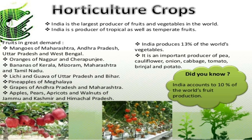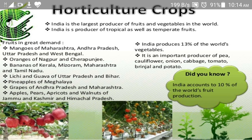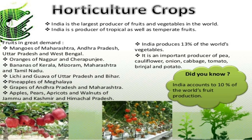Horticulture crops: India is the largest producer of fruits and vegetables in the world. India produces both tropical and temperate fruits. Fruits in great demand include mangoes from Maharashtra, Andhra Pradesh, Uttar Pradesh and West Bengal; oranges from Nagpur and Cherrapunji; bananas from Kerala, Maharashtra and Tamil Nadu; lychee and guava from Uttar Pradesh and Bihar; pineapple from Meghalaya; grapes from Andhra Pradesh and Maharashtra; and apples, pears, apricots and walnuts from Jammu and Kashmir and Himachal Pradesh.